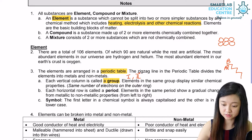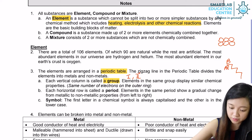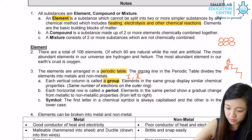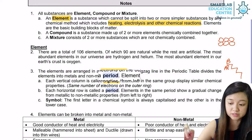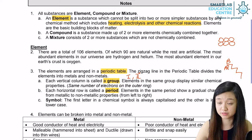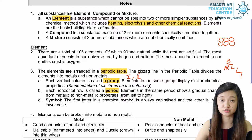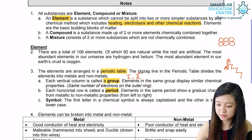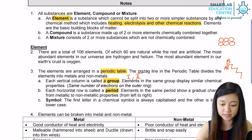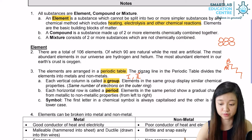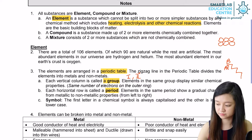Each horizontal row is called a period. The period number can be written in numerical numbers, and the first period starts with the row containing hydrogen and helium. Elements in the same period will show a gradual change from metallic to non-metallic properties as they shift from the left to the right.